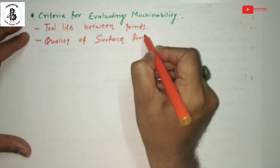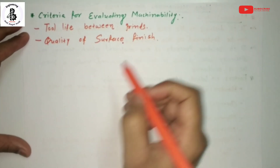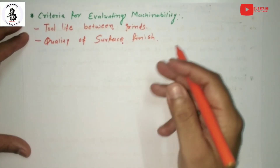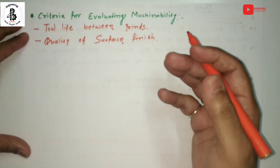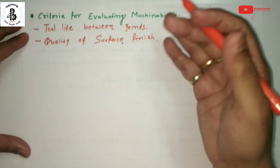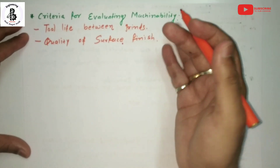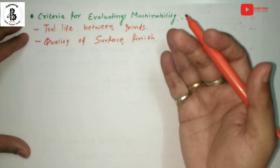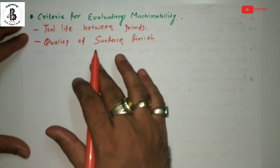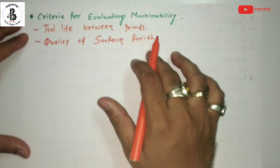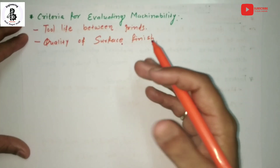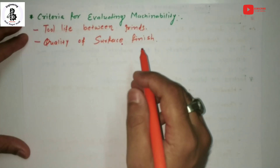The next criterion is quality of surface finish. How much accuracy and precision is required for the job also depends on machinability. If a good surface finish is achieved, that indicates good machinability, so machinability is measured in terms of the quality of the surface finish of the job.